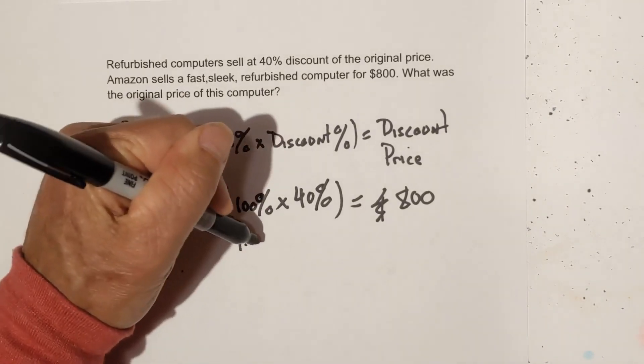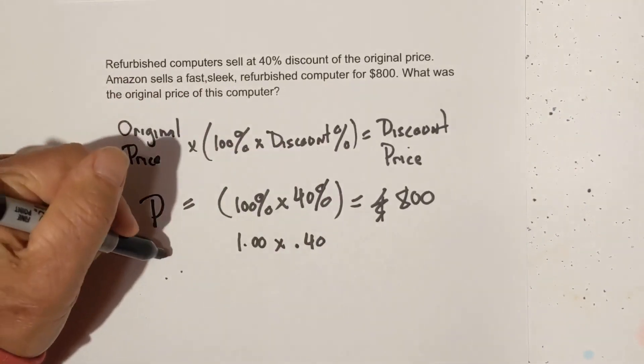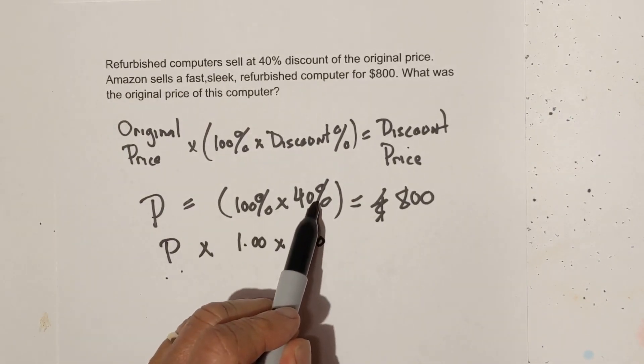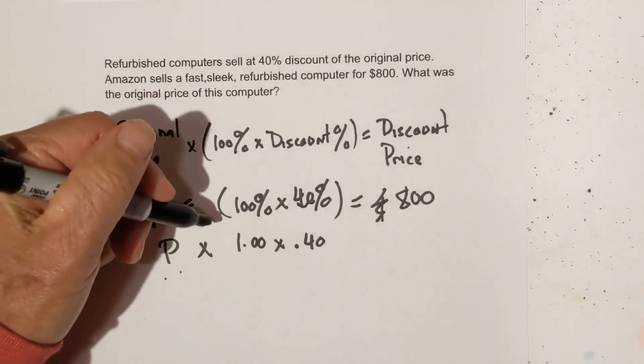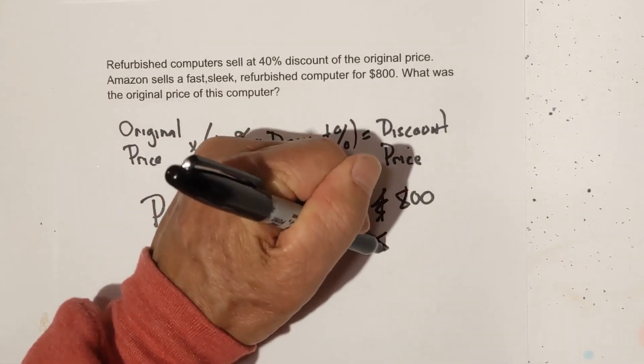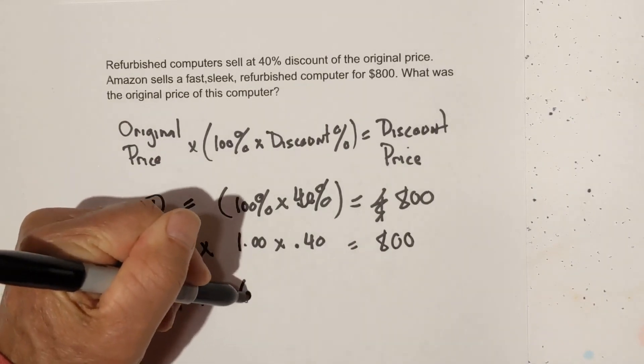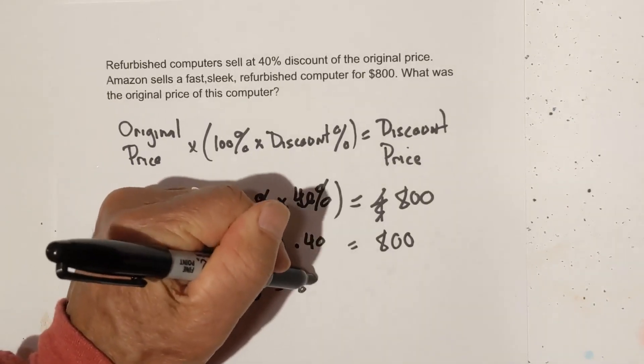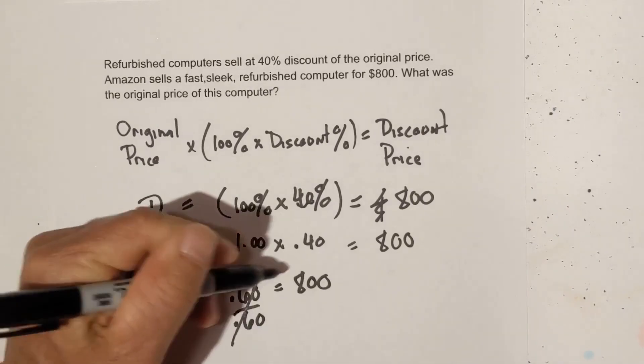So now we're going to convert this to decimals by moving the decimal two places to the right. Remember, the decimal will be at the far right. So when I move it two places, we have 1, 2, 1, 2. So now what we do is we then go with P times 0.60 because 1 minus 0.4 equals 0.6. Now we're going to divide each side by 0.6 to get rid of this.